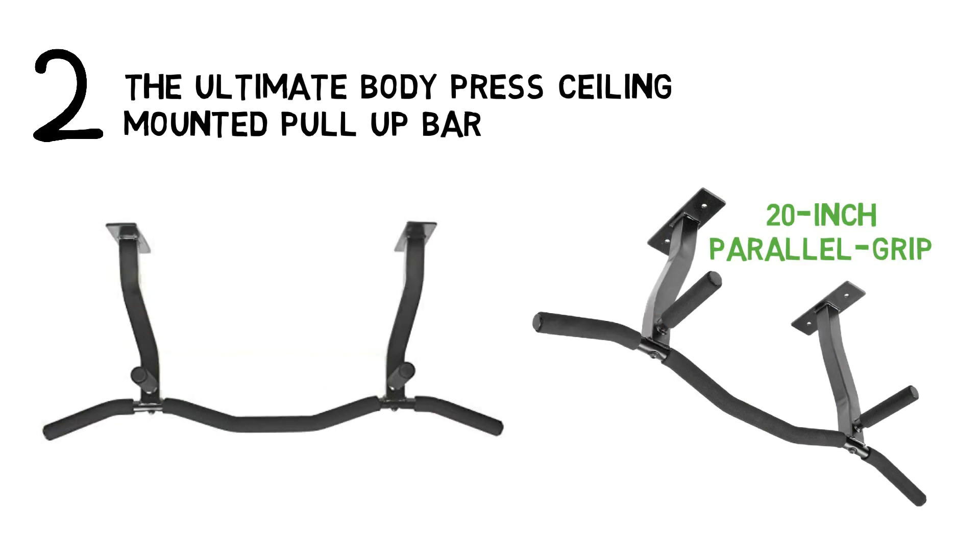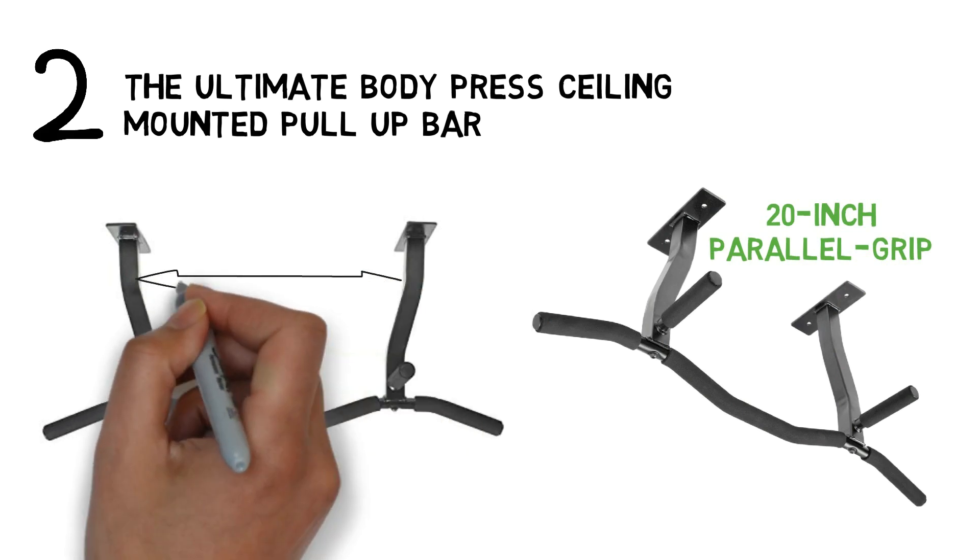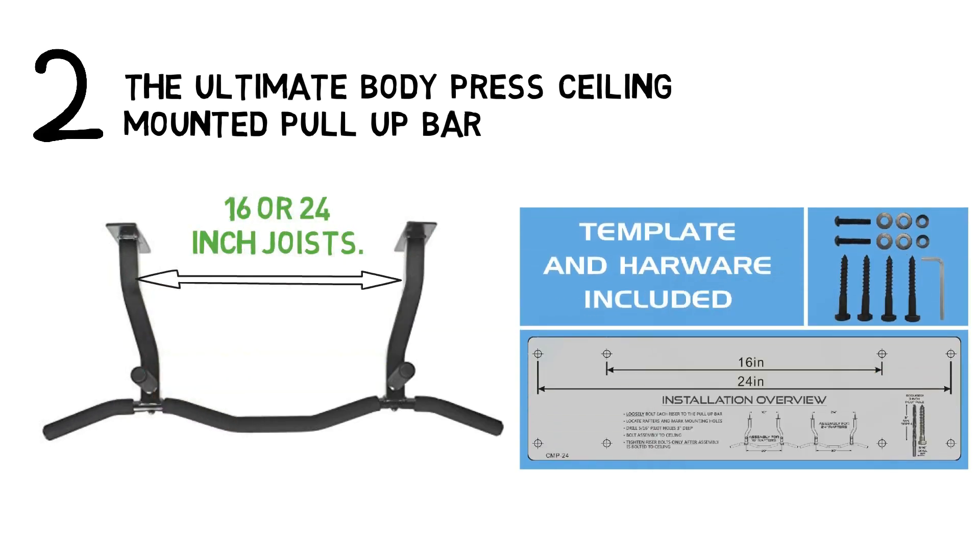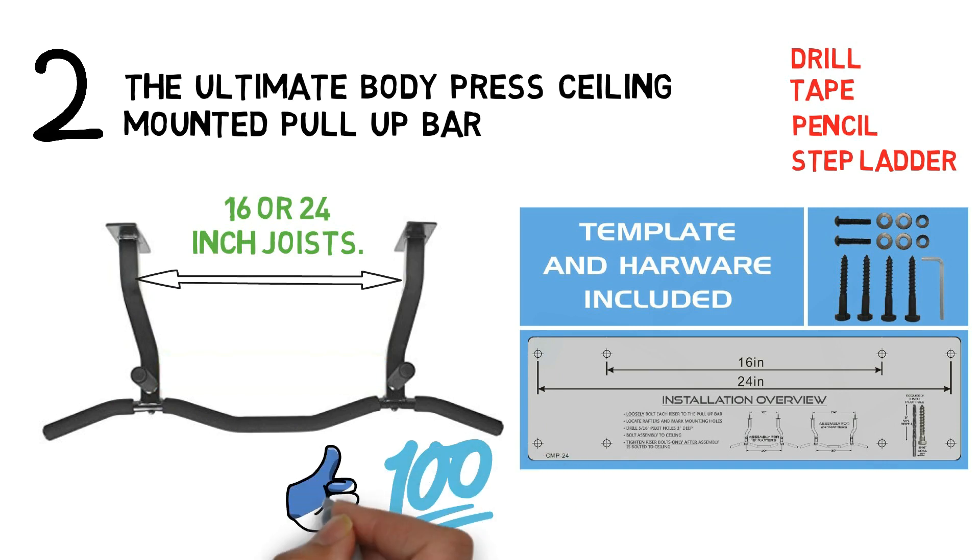The 14-inch reversible risers are designed to fit either 16 or 24-inch joists. The mounting kit comes with instructions, a template, and mounting hardware. You will need a drill, tape or pencil, and a step ladder. The Ultimate Body Press offers a fairly nebulous 100% satisfaction guarantee with this product.